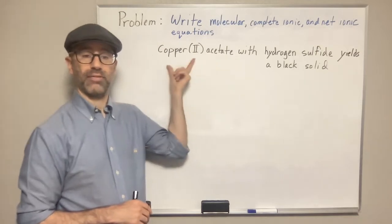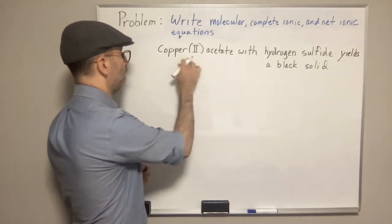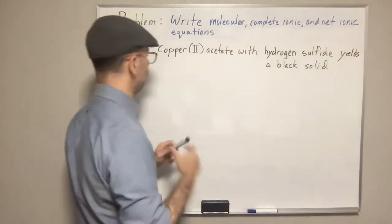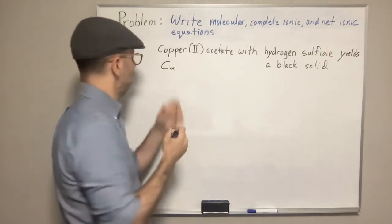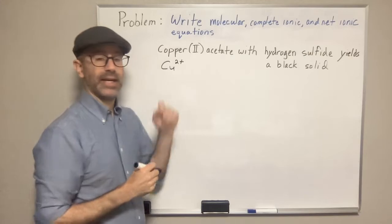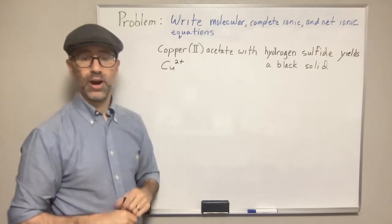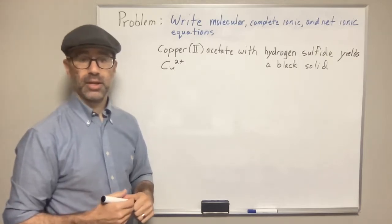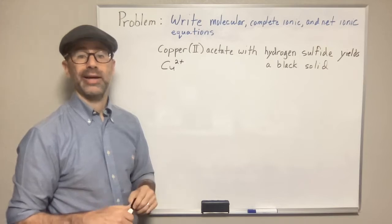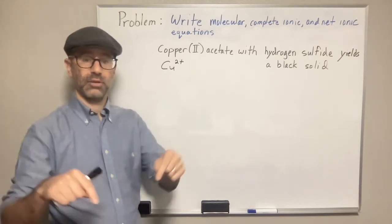And then you have the acetate ion. So we have the copper 2 ion and the acetate ion, and we'll need to write the formula and the charges for those. Copper — Cu — has a plus 2 charge. The acetate ion is a polyatomic ion and you need to know what the polyatomic ions are. I have a couple of videos on polyatomic ions, parts 1 and 2, going over how to memorize them and the patterns to remember. That'll be linked in the description.